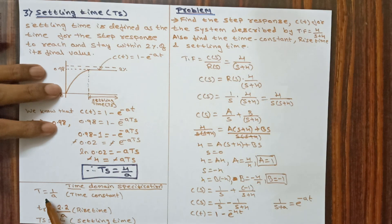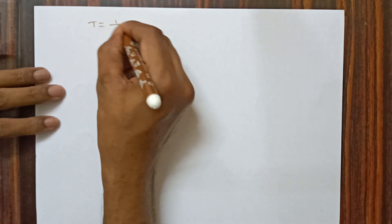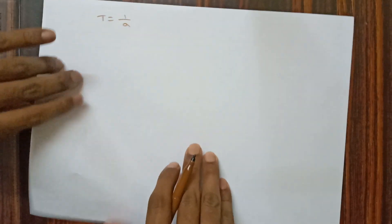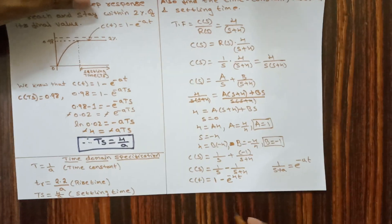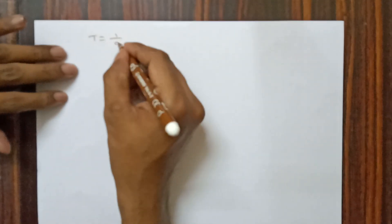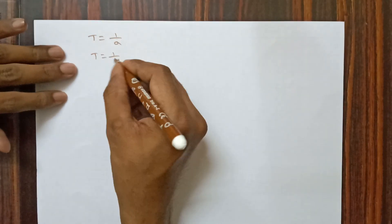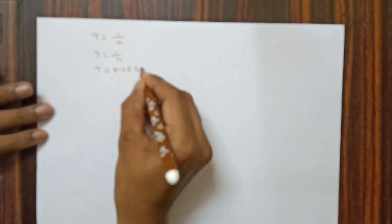Now calculating the time domain specifications, using the formulas: time constant T equals 1 by a, rise time TR equals 2.2 by a, settling time TS equals 4 by a. From the output equation, a equals 4. Therefore time constant T equals 1 by 4, which gives T equals 0.25 seconds.